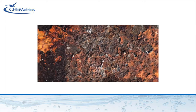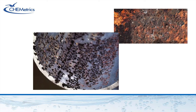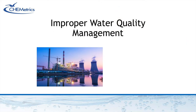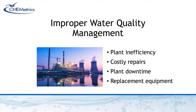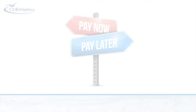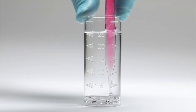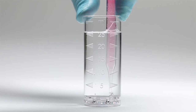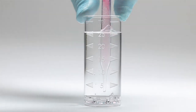Even low concentrations can be highly destructive, causing localized corrosion and pitting of metal system components with damage that extends far below the surface. Improper water quality management results in plant inefficiency, costly repairs, downtime, and eventually the need to purchase replacement equipment. It's pay now or pay later — do the maintenance for relatively low cost on the front end, or skip it and pay a lot more for repairs in the long run.